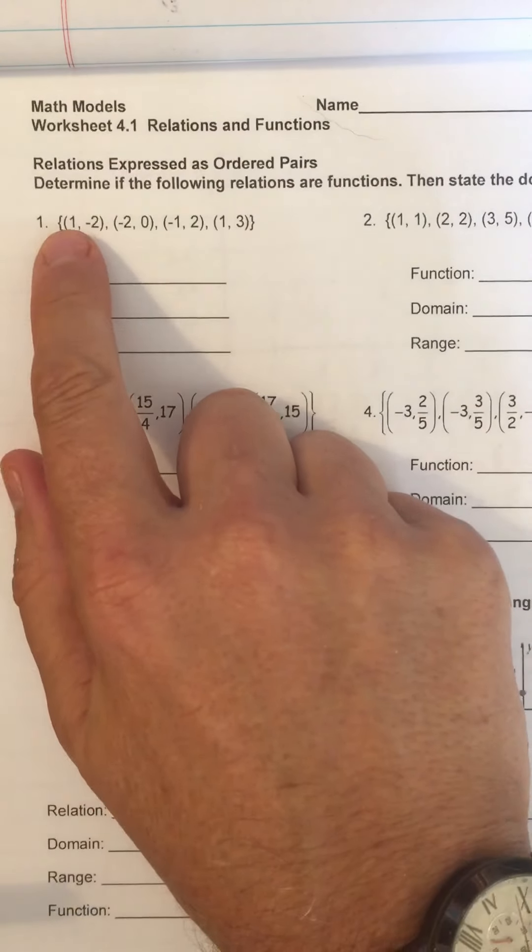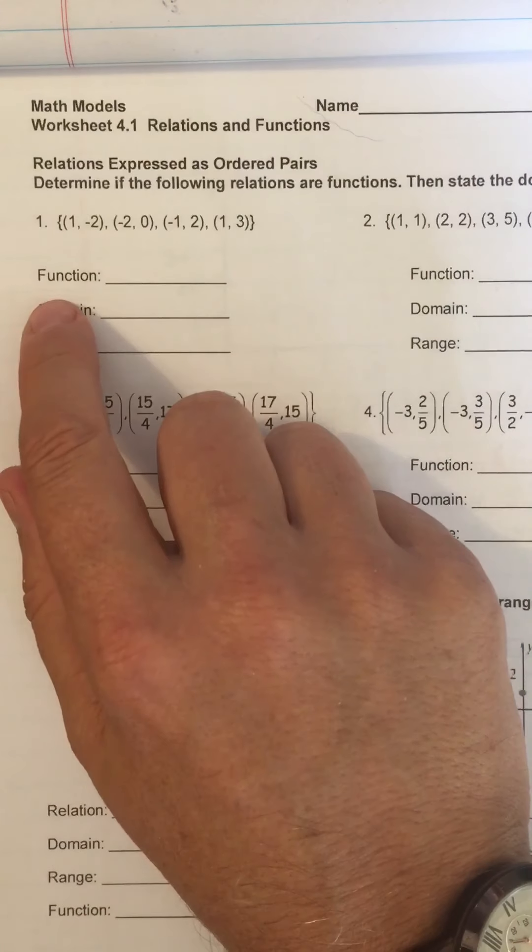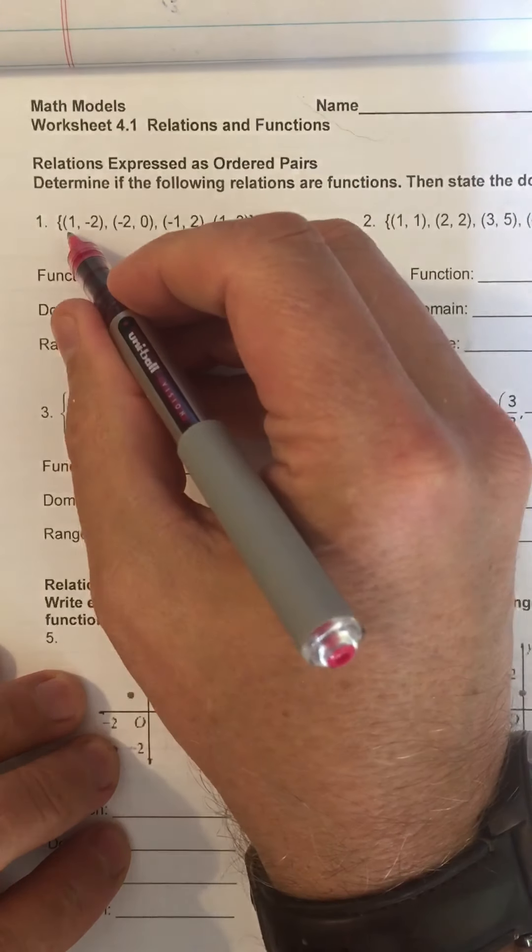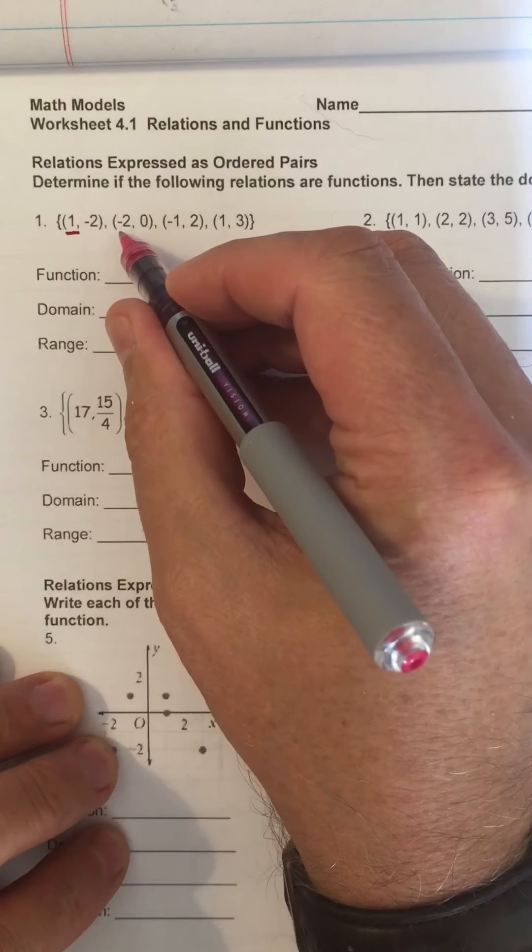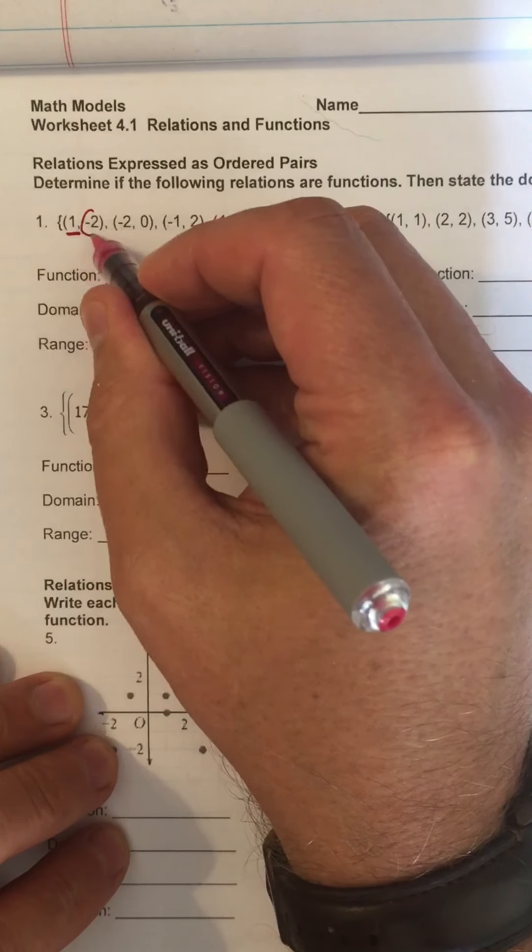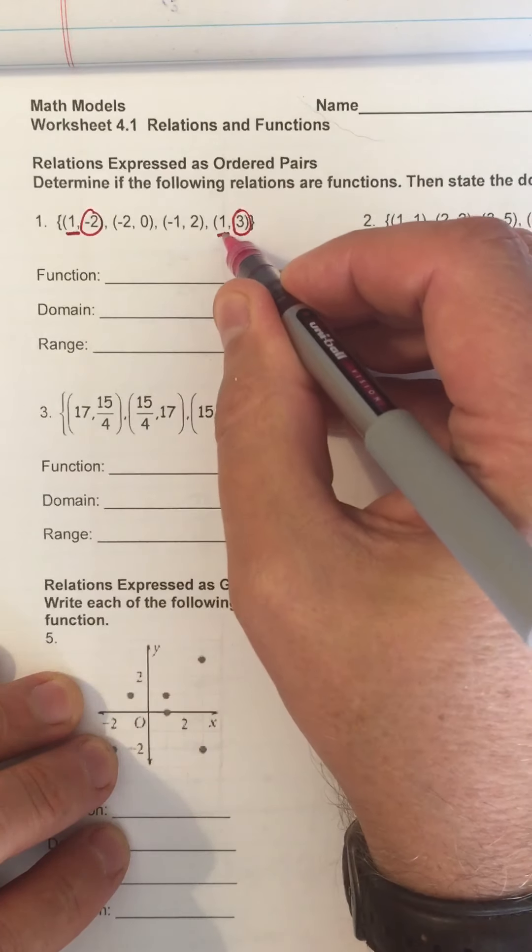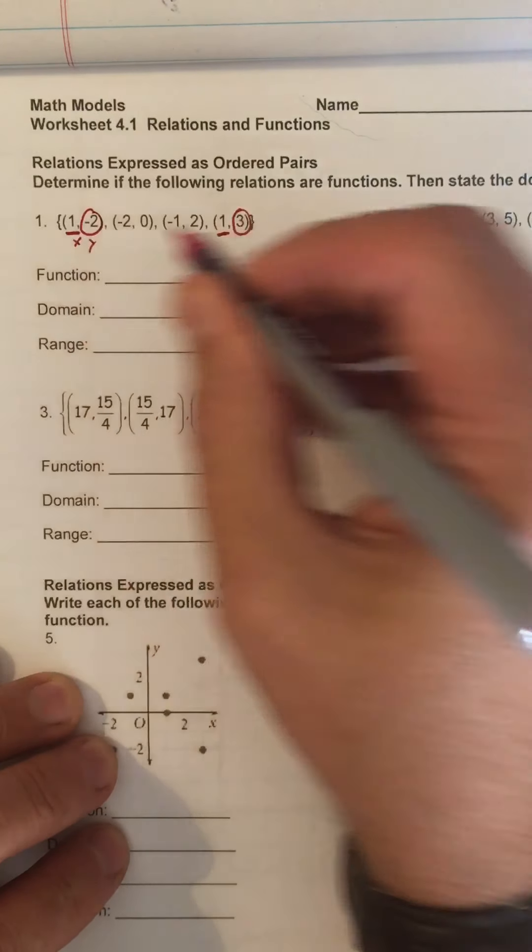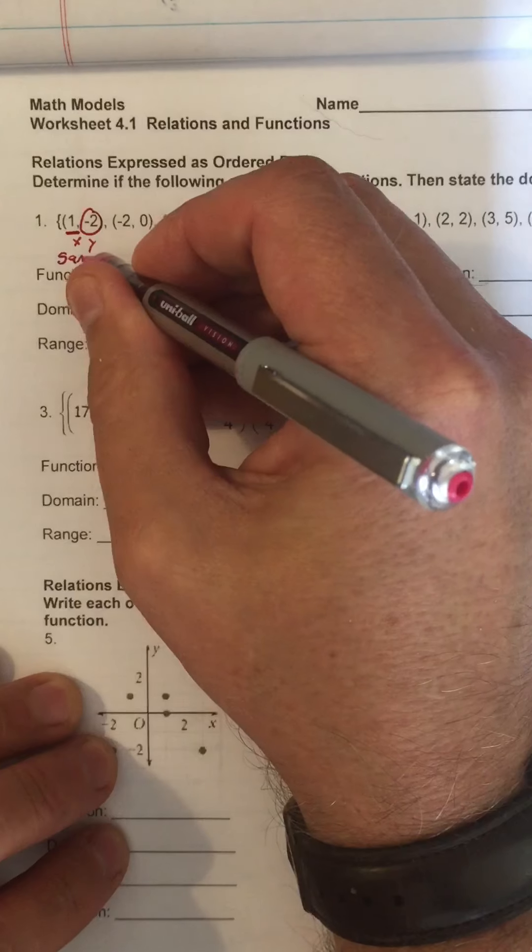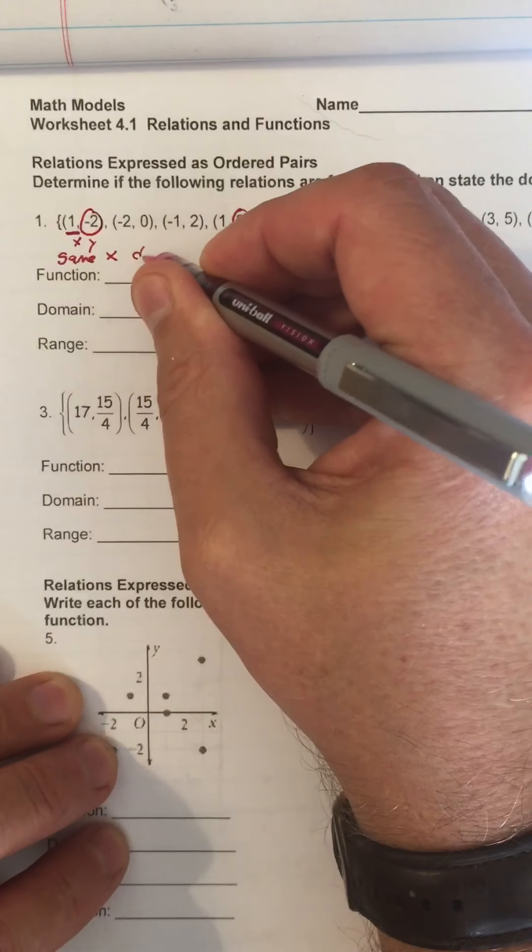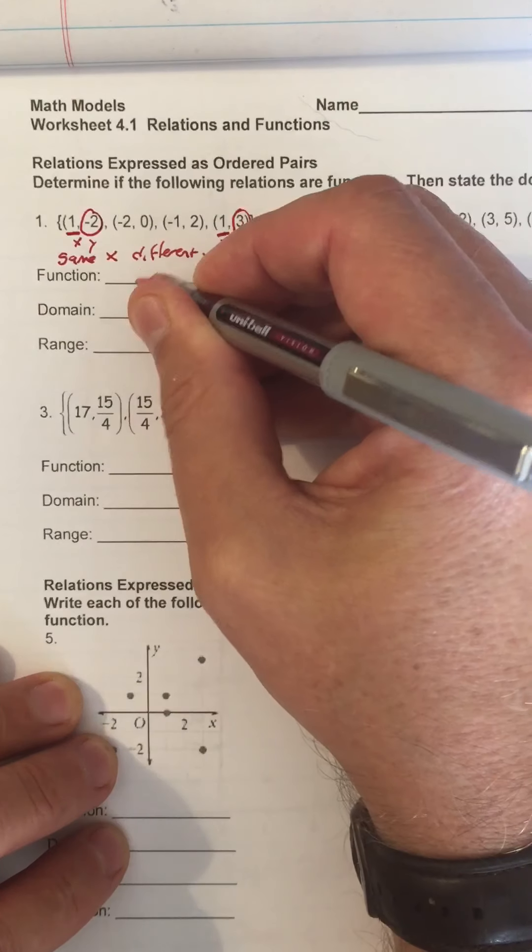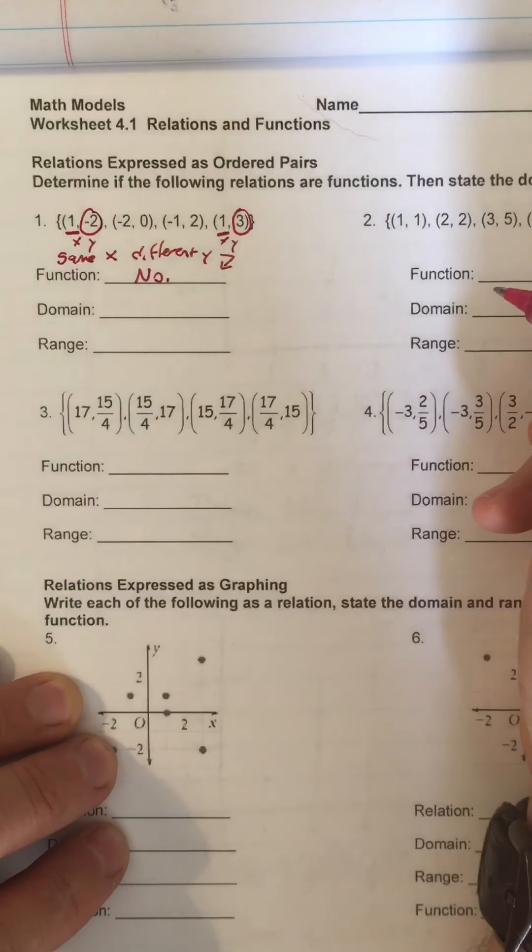So I see some points. It asks me, is it a function? So I want to look if I ever have the same x with two different y's. So here's 1, negative 2, negative 1, and here's 1 again. Different y's with the same x. This is x, this is y, this is x, this is y. Since we have the same x with different y, therefore it is not a function. No.